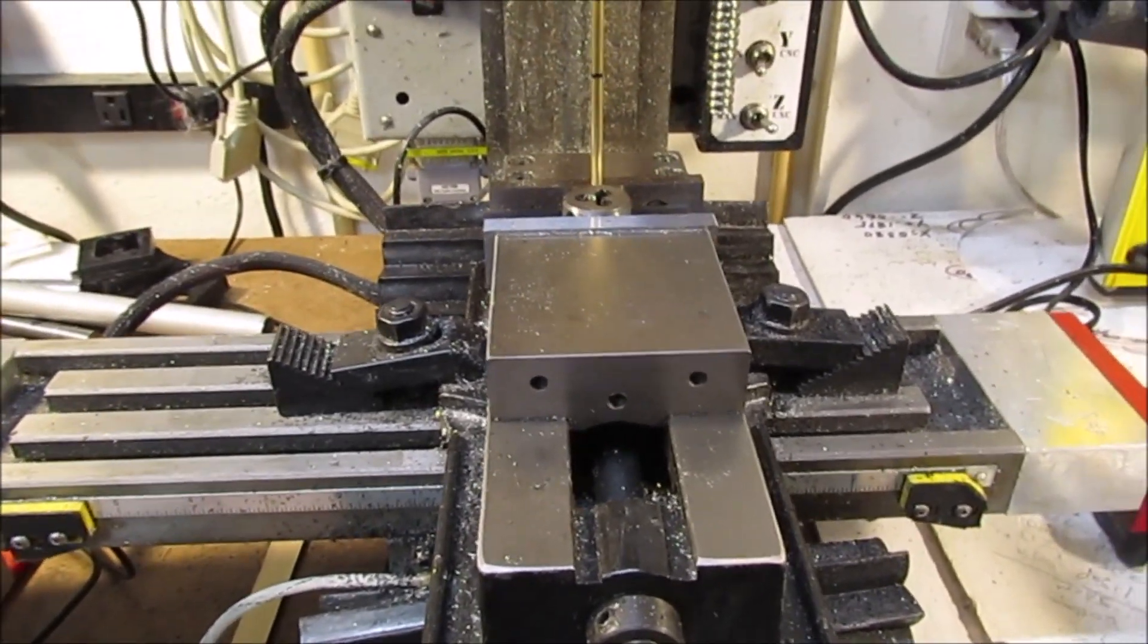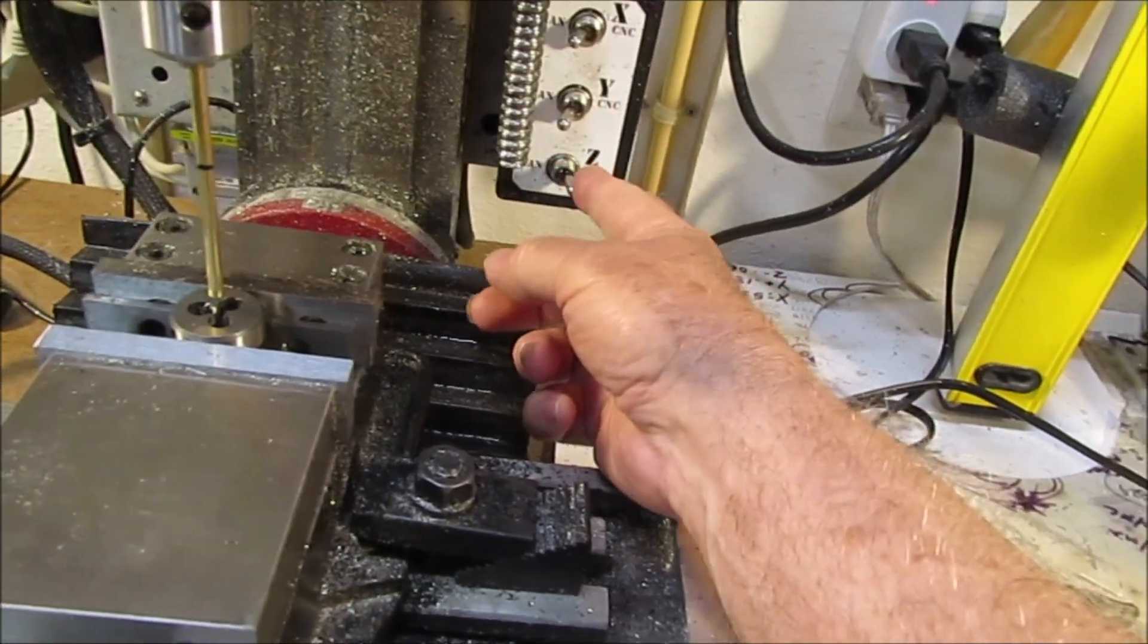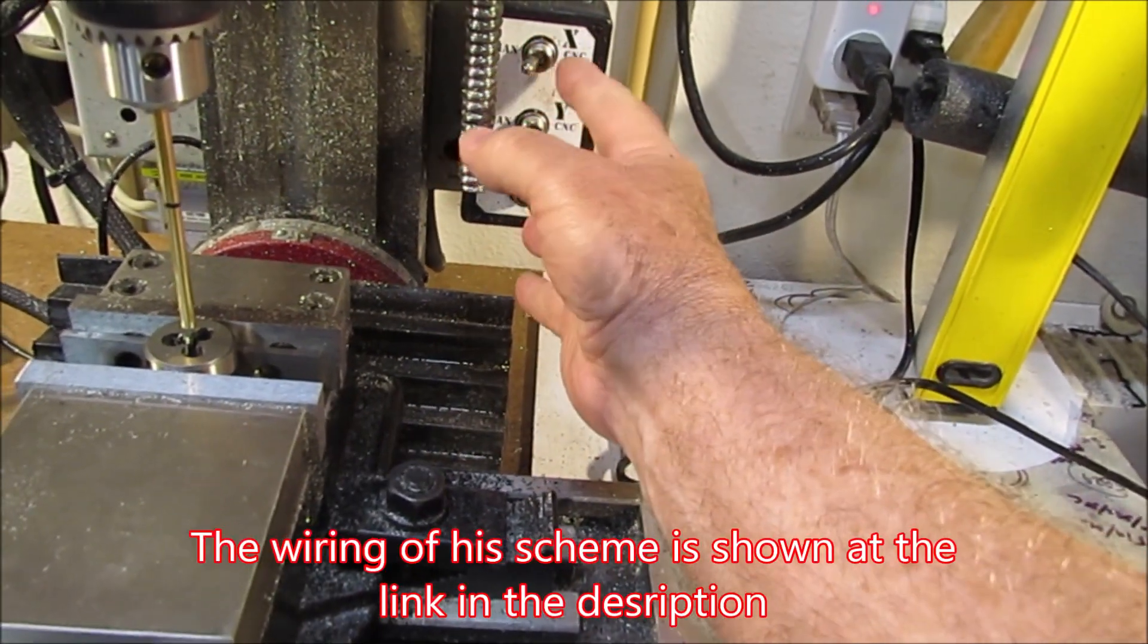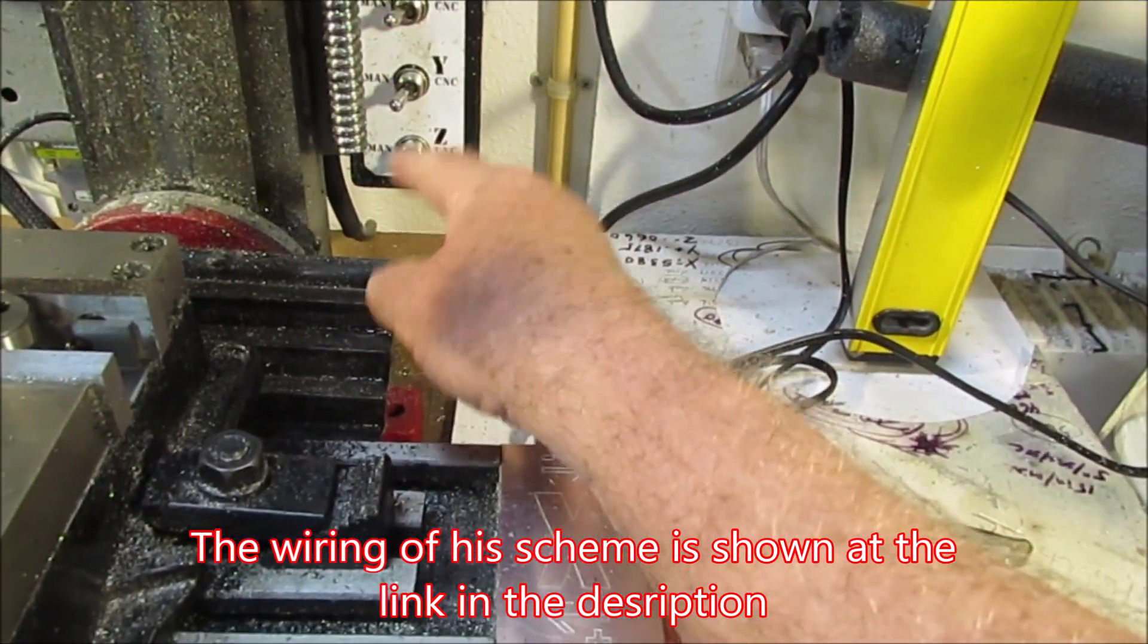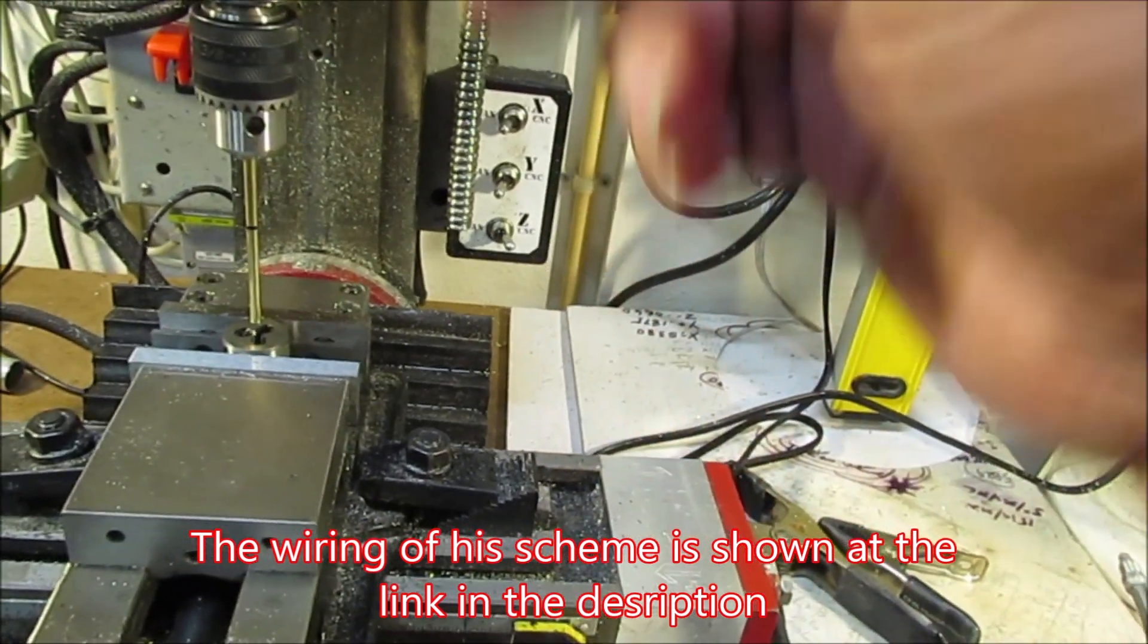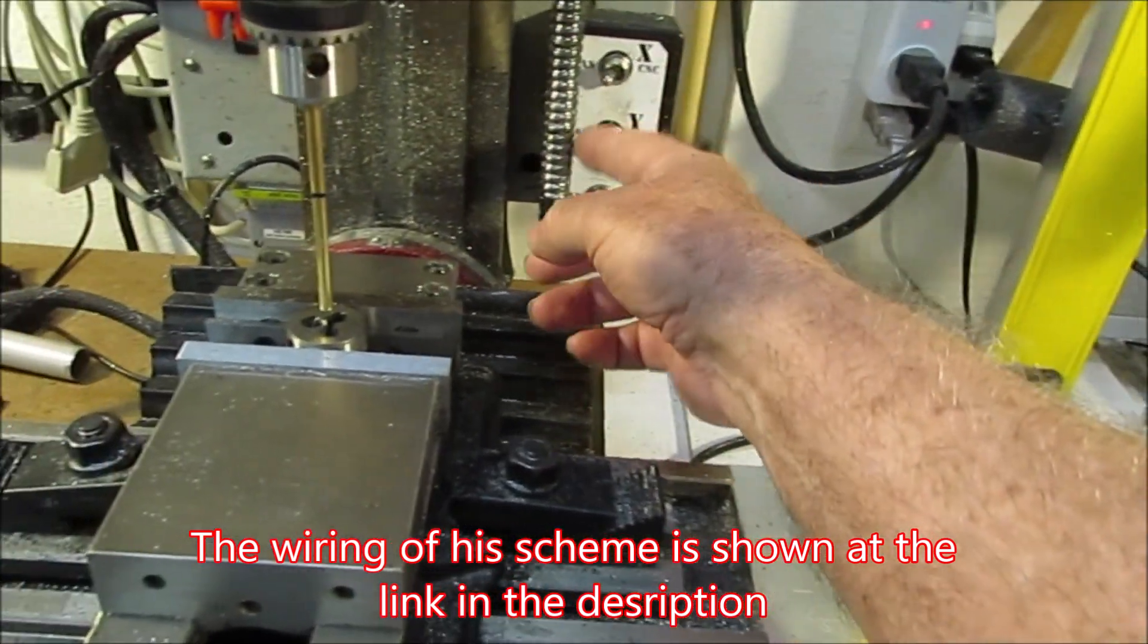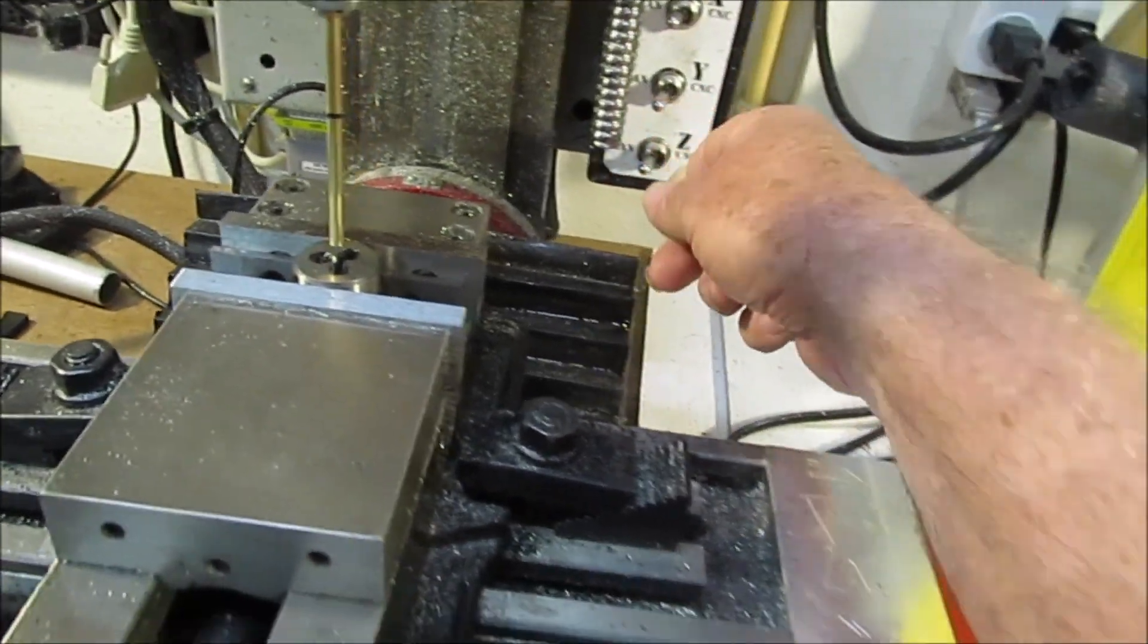This is what we've got here. I've got X, Y, and Z. This switches off my axes. If I want to use the manual, it says manual or CNC. In this case, I just used the Z axis in CNC to get this thing close. X and Y is off. I'll be using that. And now I'm going to switch off Z.